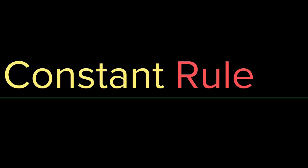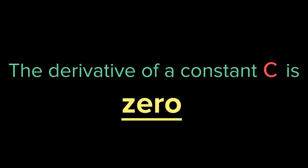The first rule we have is the constant rule. How do you differentiate a constant? Well, the derivative of a constant c is zero. So if you have any constant or any number, the derivative of that number is zero.